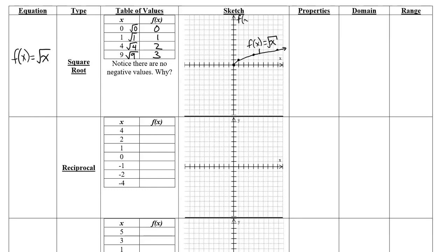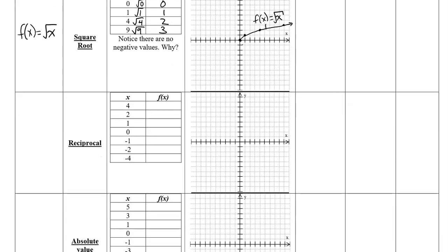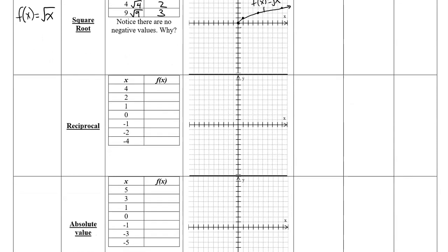What we're going to get is something that looks like the top half of a sideways parabola — and you would be correct. This is f of x, the positive part. If we took the negative root, it would look something like the bottom half going down here.